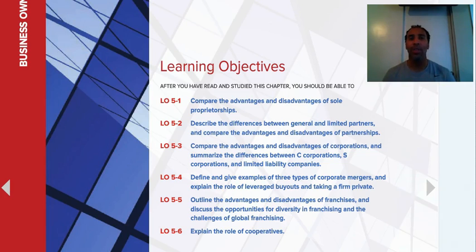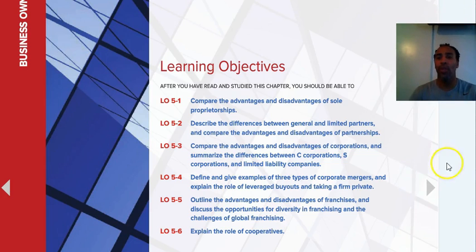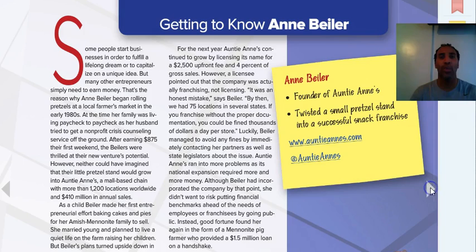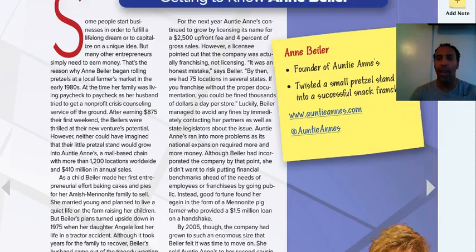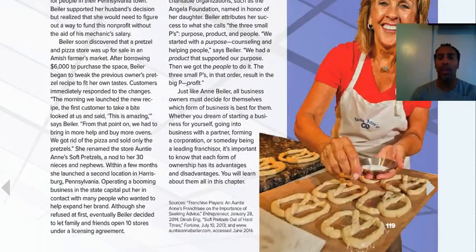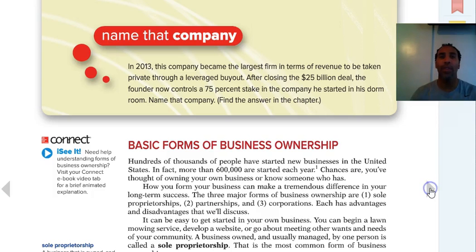We're talking about the different types of businesses that you can start or be a part of. You need to know and understand what's best for you and what's best for the company that you work for. Check out the story on Auntie Anne's pretzels — she's actually the founder. It's always great if you can find something that you love to have as your job; it will make work seem like something fun and interesting as opposed to something you have to go to.